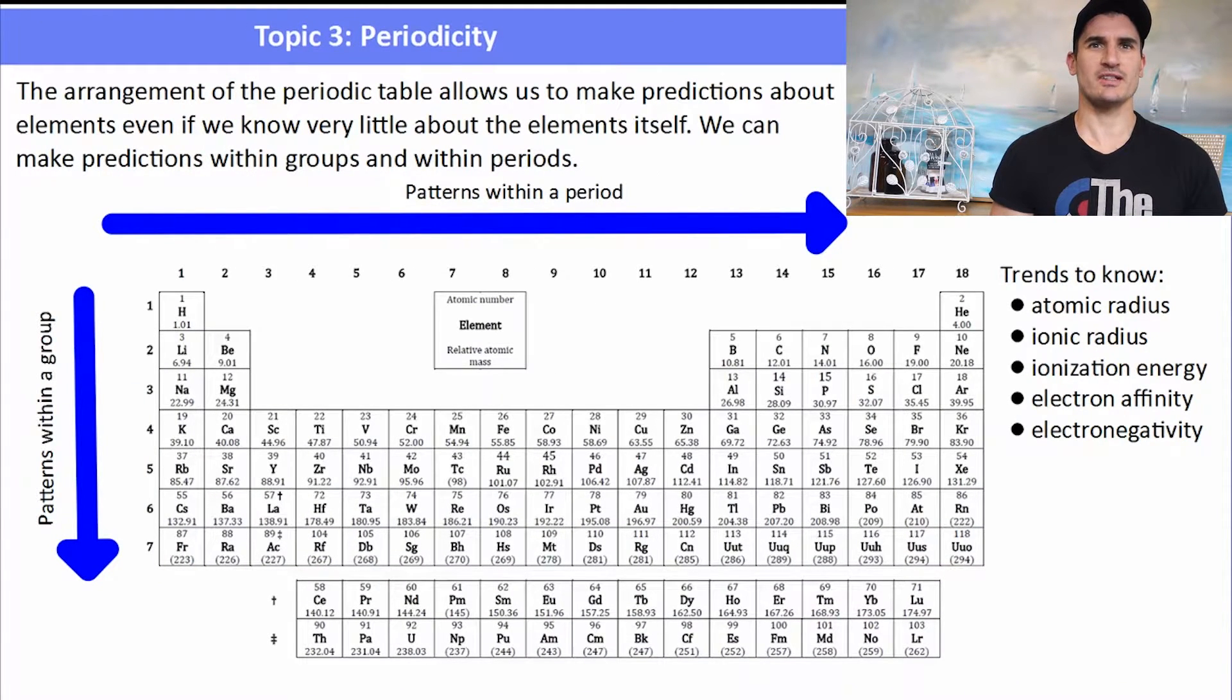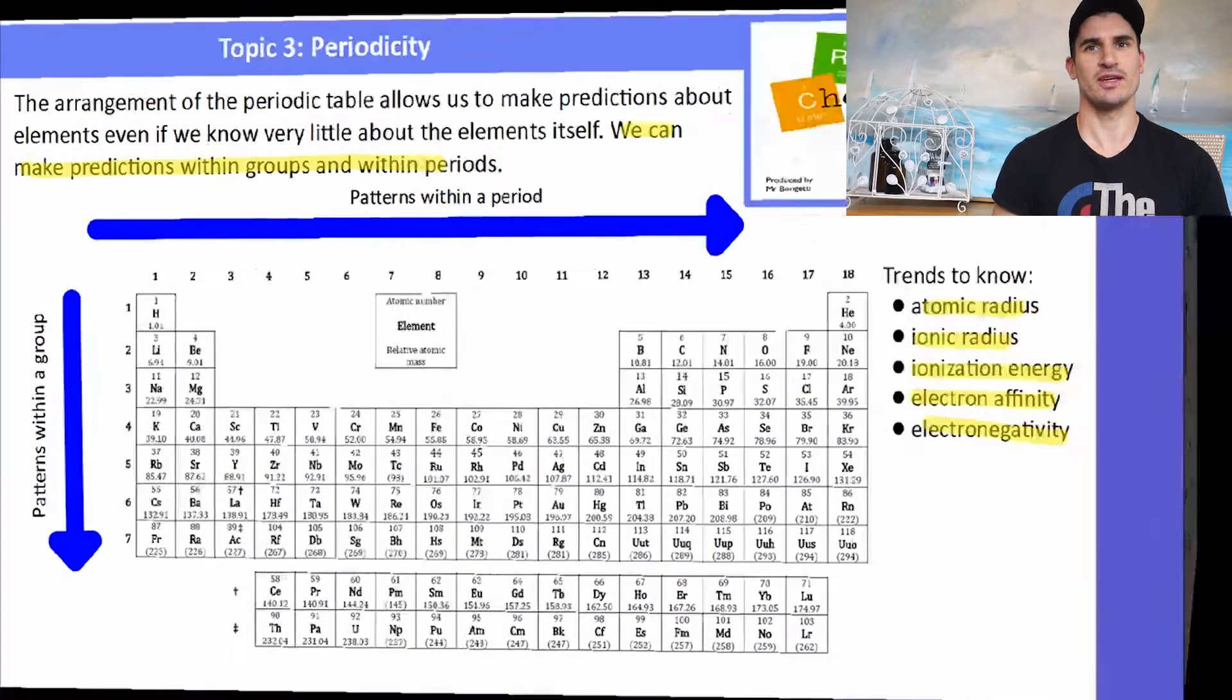The arrangement of the periodic table allows us to make predictions about elements, even if we know little about the elements themselves, because we know that things in the same group have similar chemical and physical properties. So we need to talk about patterns within a group, the vertical columns, or patterns in a period. And when we talk about patterns in a period, we only need to know about period 3. The things we need to know are atomic radius, ionic radius, ionization energy, electron affinity and electronegativity.